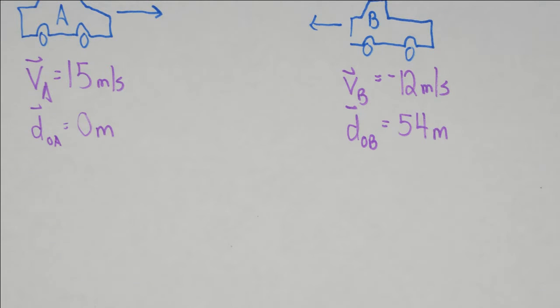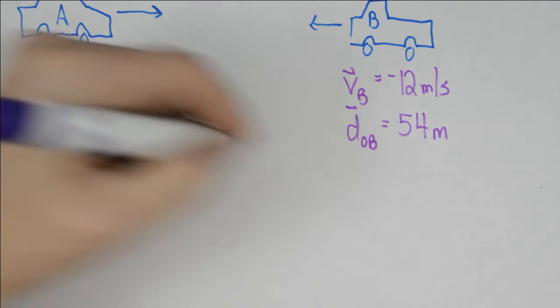When it comes to dealing with two objects, we're going to require two equations of motion. So we have a car and a truck that are moving toward each other, and they're initially separated by some distance.